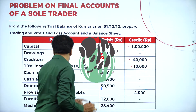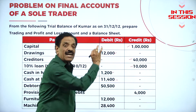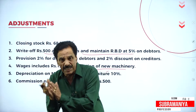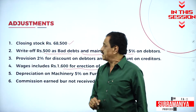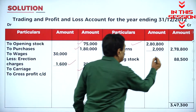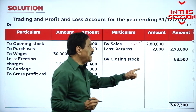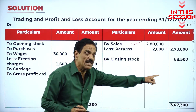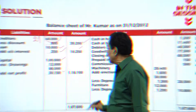Cash in hand is an asset. Cash in bank is an asset. The P&L account credit side and asset set up the balance sheet. Sales return is 2,000. What's the balance? 2,78,800. Net profit during the year is 30,150.